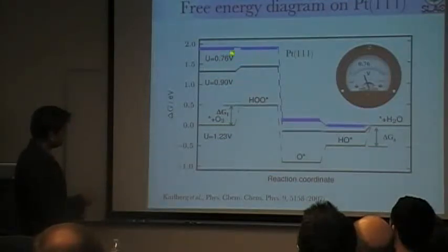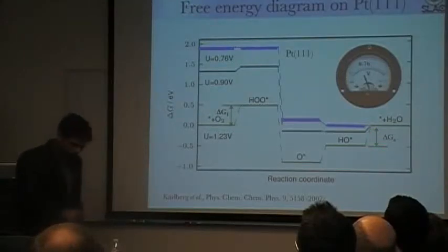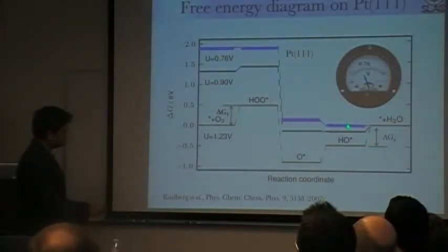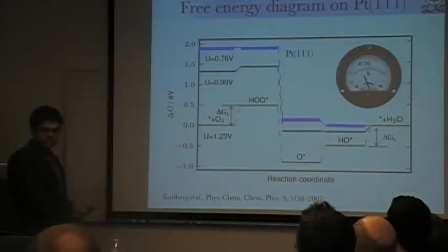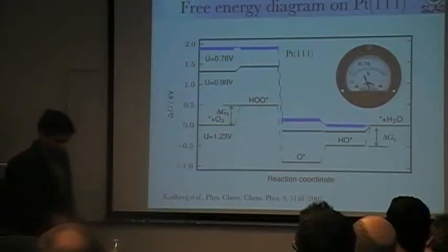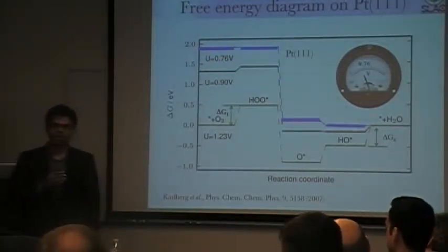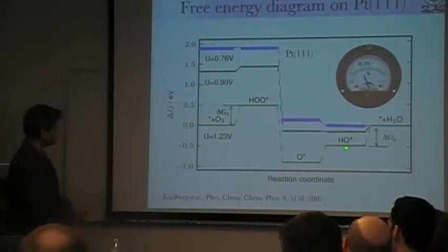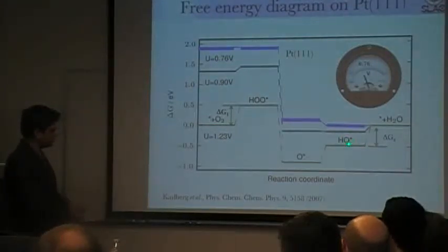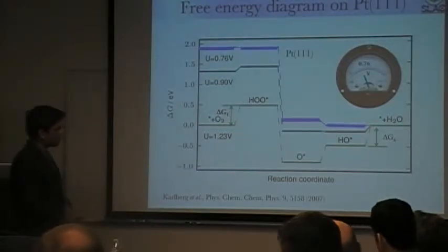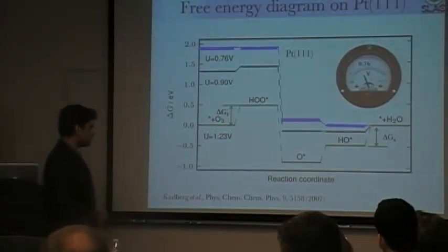At this potential it is downhill in free energy to go from reactant to product, right? And so the most difficult step here is to remove OH to water. This is the most difficult step on platinum 101 and this runs at about 0.76 volts. So now one can say, well all one needs to do is find a catalyst where it binds this intermediate weaker and then I can go to the product at a much higher potential. Well there's a problem with this logic.